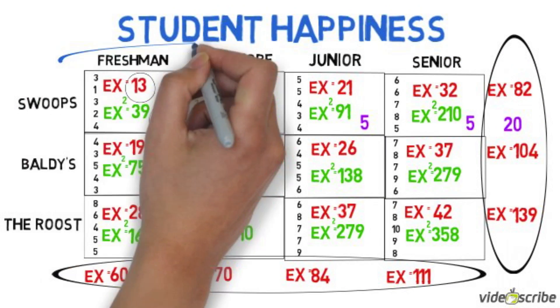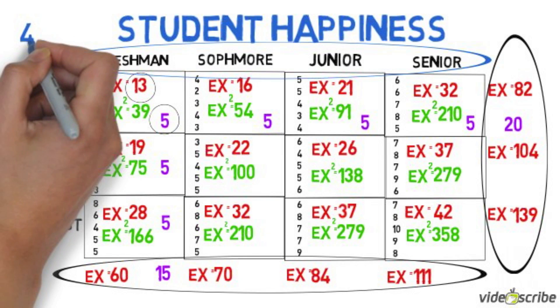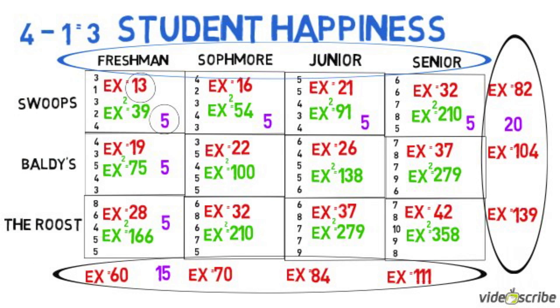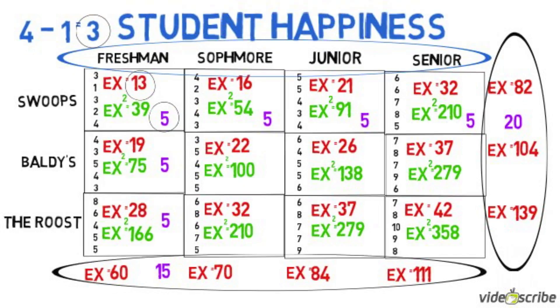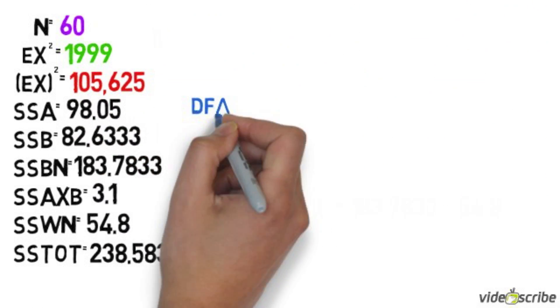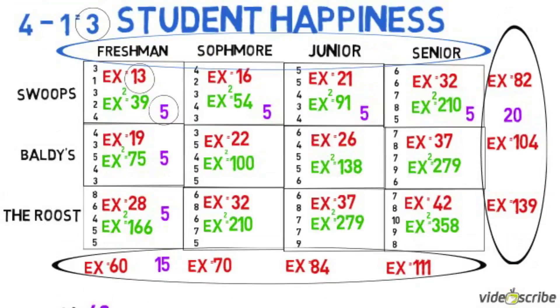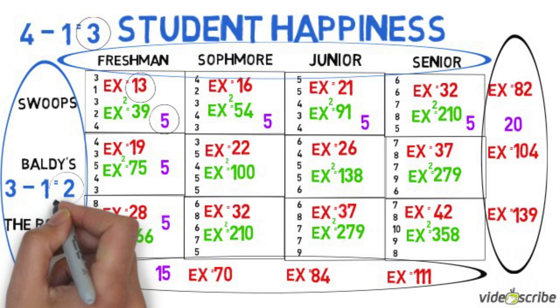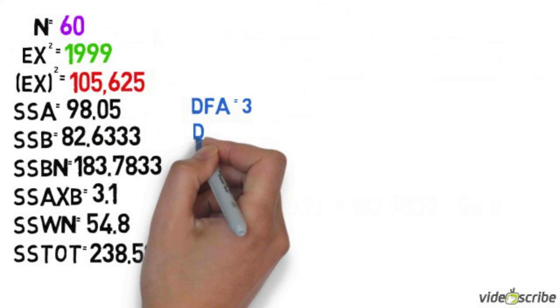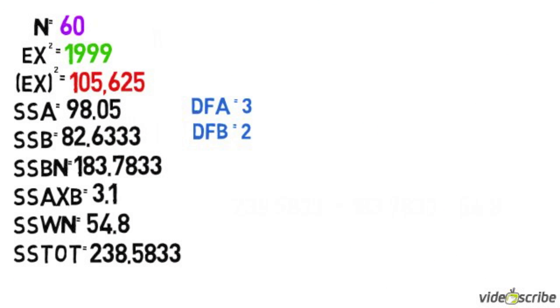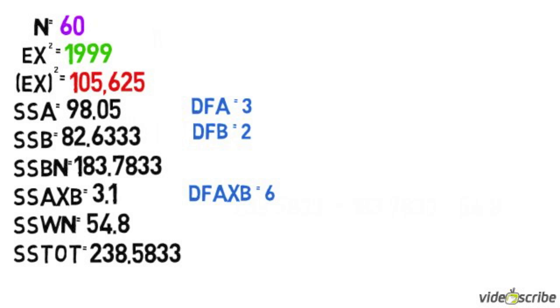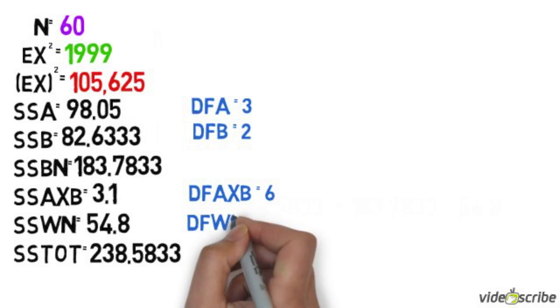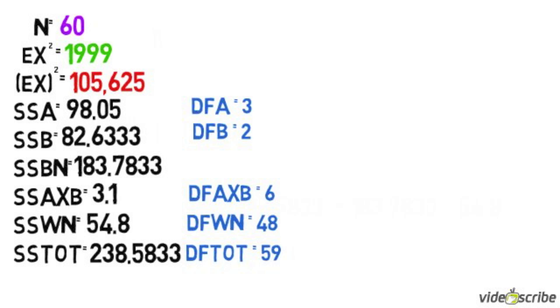Now on to finding degrees of freedom. For degrees of freedom of factor A, there's four levels. 4 minus 1 is 3. To find degrees of freedom for factor B, there's three levels within factor B. 3 minus 1 equals 2. To find degrees of freedom for the interaction, you multiply degrees of freedom for A times B. For degrees of freedom within, you subtract 12 from 60. And finally, for degrees of freedom total, subtract 1 from 60.